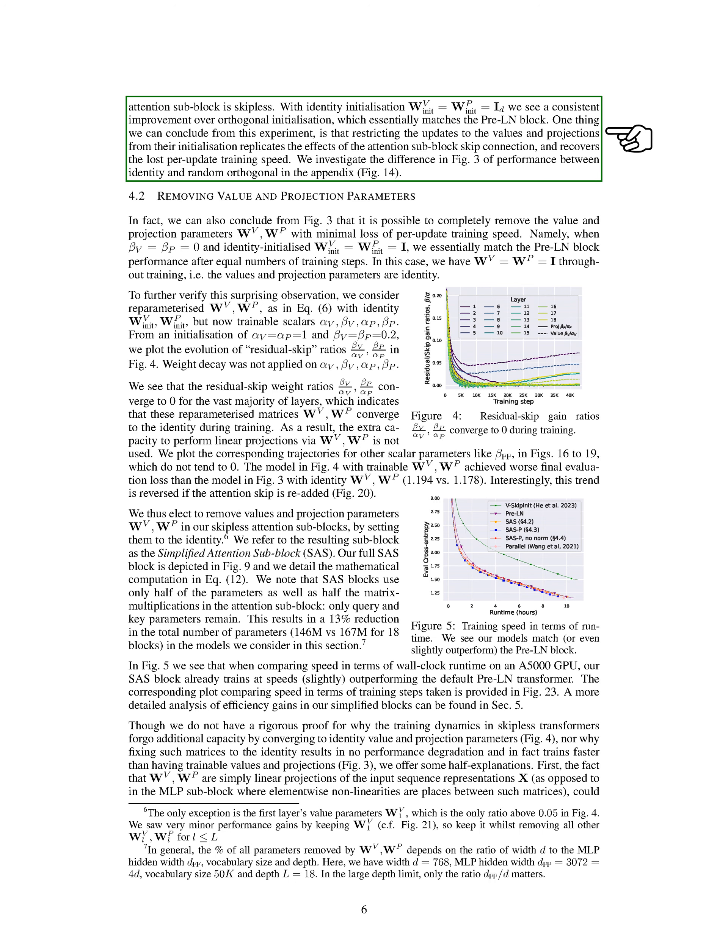In conclusion, we found that limiting the updates to the values and projections from their initialization replicates the effects of the attention sub-block skip connection and recovers the lost per-update training speed. The authors introduce modifications to the self-attention mechanism to correct signal degeneracies and enable training of skipless networks, and propose a reparameterization of the value projection weights to recover the lost training speed.